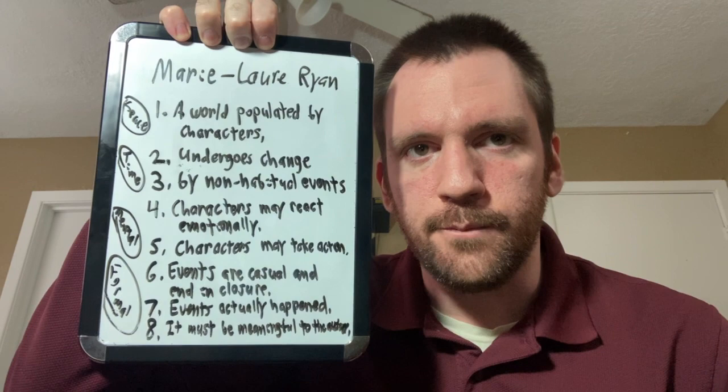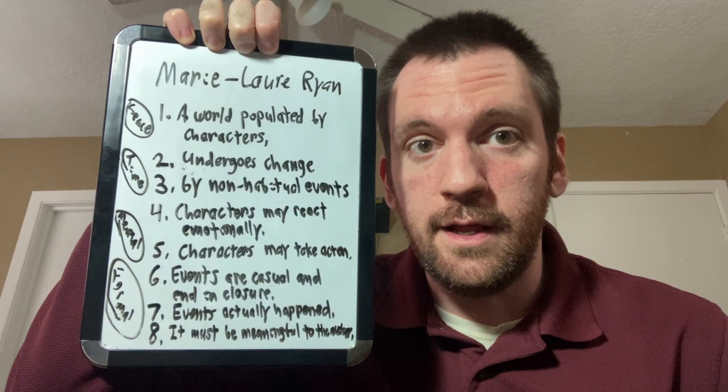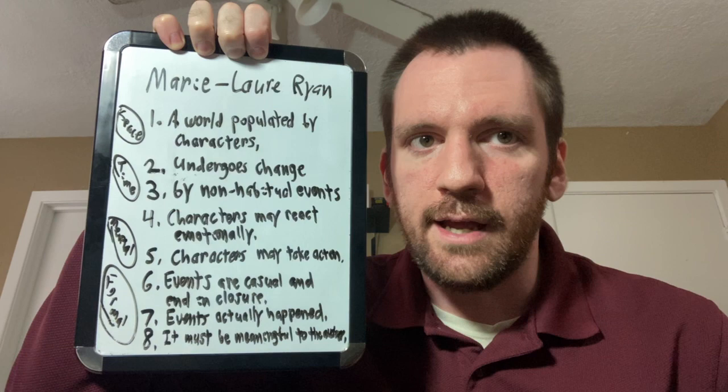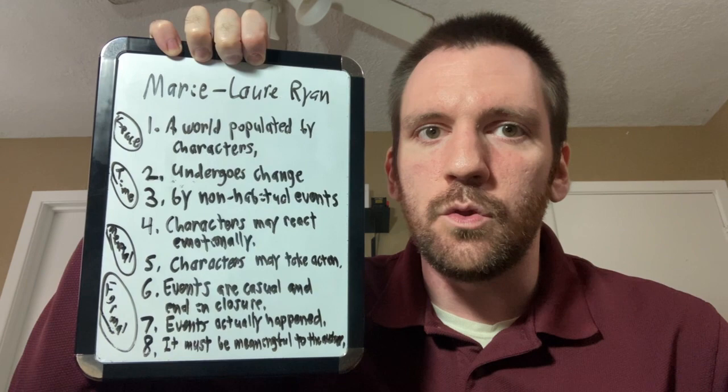In our paper, Towards a Definition of Narrative, narratologist Marie-Laure Ryan outlines eight principles across four dimensions of what defines a narrative. You have the spatial dimension. It is a story world inhabited by characters. The temporal dimension, that story world and characters undergoes change, and it is by a non-habitual event. It's something that doesn't normally happen within the story world.